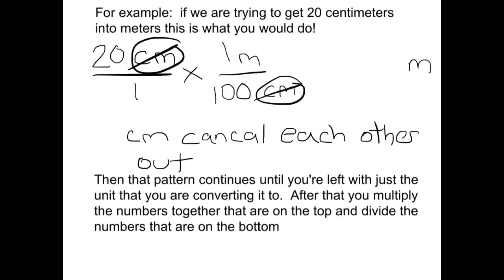For example, if we are trying to get 20 centimeters into meters, this is what you would do. 20 centimeters over one times one meter over 100 centimeters. Because now the centimeters cancel each other out and we're trying to convert it into meters, and now the unit that we have left is meters.